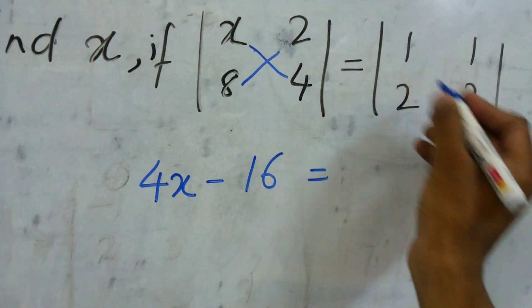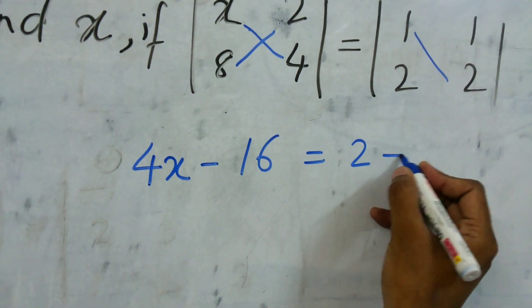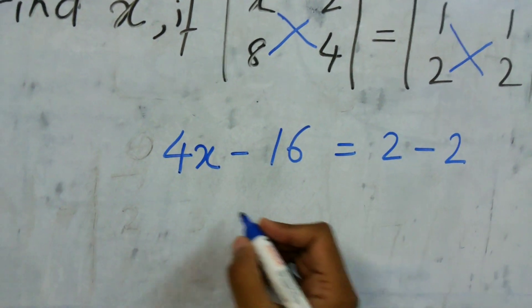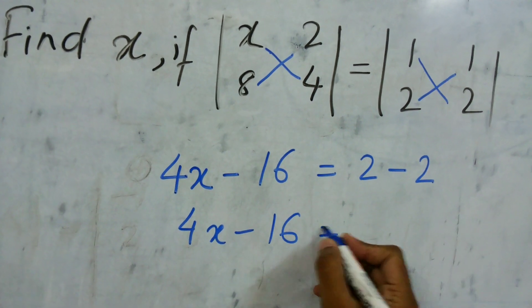So this will be equal to 1 into 2, so that is 2 minus 2 into 1 that is 2. So this will be 4x minus 16 equal to 0.